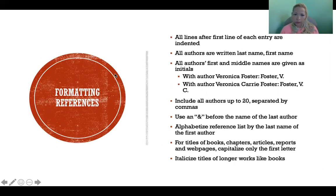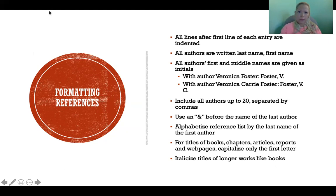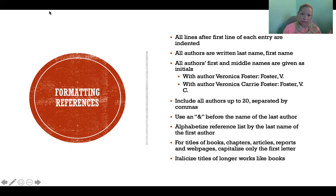For formatting references, here are some basic rules for how to format your reference list. All lines after the first line of each entry are indented — so if an entry is three lines long, the first line is flush to the left and then the second and third lines are indented. All authors are written as last name, comma, and then the first initial and middle initial if one is given.